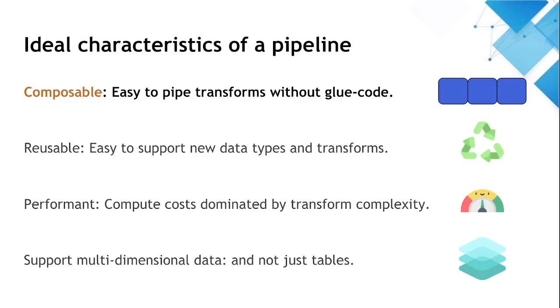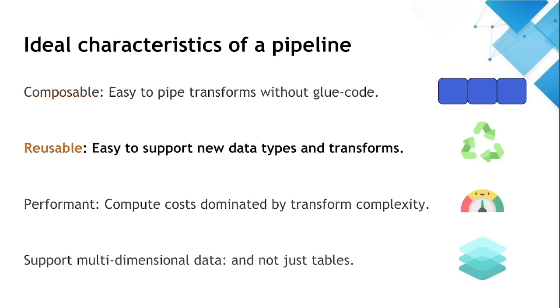So after thinking about this, we asked, what are the characteristics of an ideal pipeline? The first is that the transformations should be composable. That is, it should be easy to pipe transforms without glue code, and I should be able to insert and remove transforms without the code breaking. Secondly, transformations should be reusable. It should be easy to add a new transform, which should work on all supported types, and not just one, like dataframes. It should also be easy to add support for new types. I shouldn't have to use glue code to convert to a non-native type first, and then back.